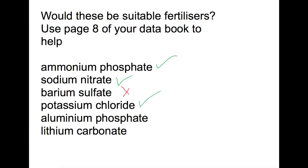However, aluminium phosphate, although it contains phosphorus, is not soluble, so couldn't be used as a fertilizer. And finally, lithium carbonate, although soluble, doesn't contain any of the required elements and is therefore not a good fertilizer.